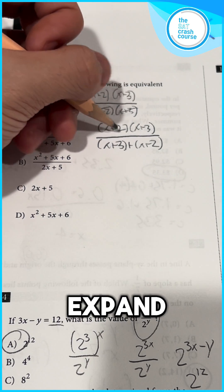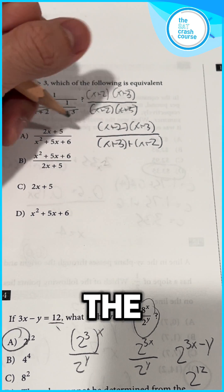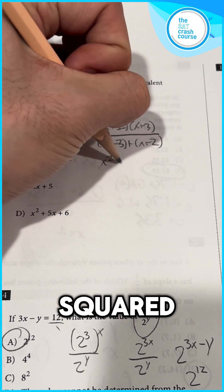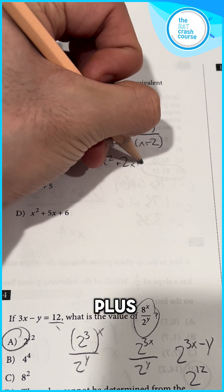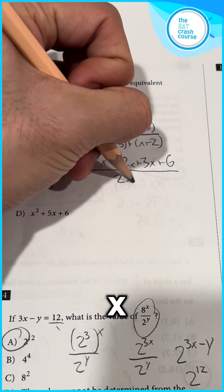Then, we can expand this expression to find which answer choice is equivalent to it. Using the FOIL method, the top expands to x squared plus 2x plus 3x plus 6. The bottom expands to 2x plus 5.